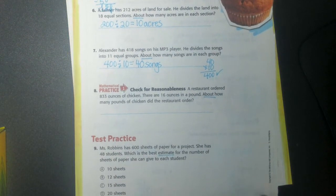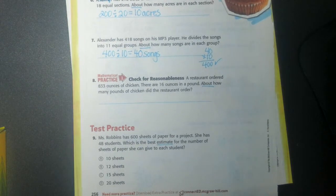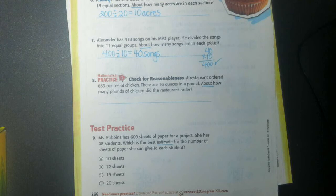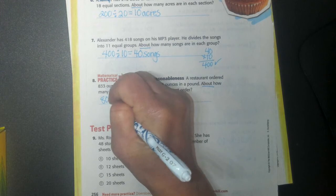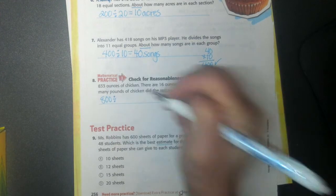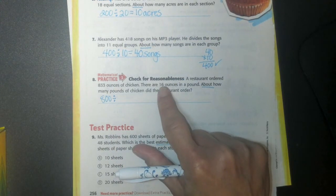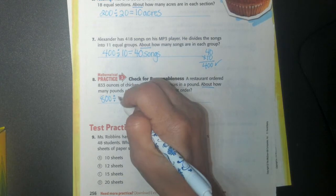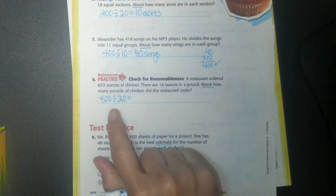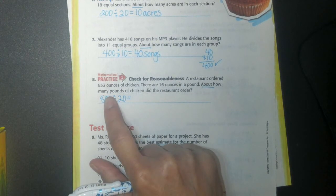My next one, number 8, it says a restaurant ordered 833 ounces of chicken. There are 16 ounces in a pound. About how many pounds of chicken did the restaurant order. So there's about 800 ounces of chicken. And I'm going to divide it up into a pound, which is 16 ounces. But 16 is close to 20.